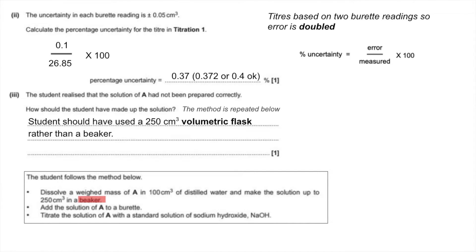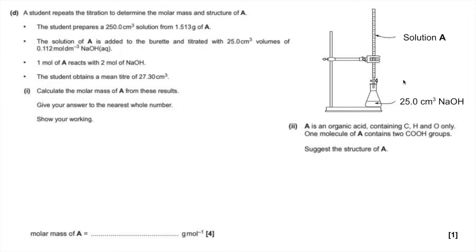Moving on to the calculation now. I've got a diagram here for the titration setup. Solution A, once it's been made up in the 250, goes into the burette and each titration is using 25 cm³ of sodium hydroxide. If we want to calculate the molar mass of A, we basically need to know the moles of A that have gone into that 250 cm³. The steps in the calculation: first, we know the concentration and volume of the sodium hydroxide, so the moles of sodium hydroxide is 0.0028.